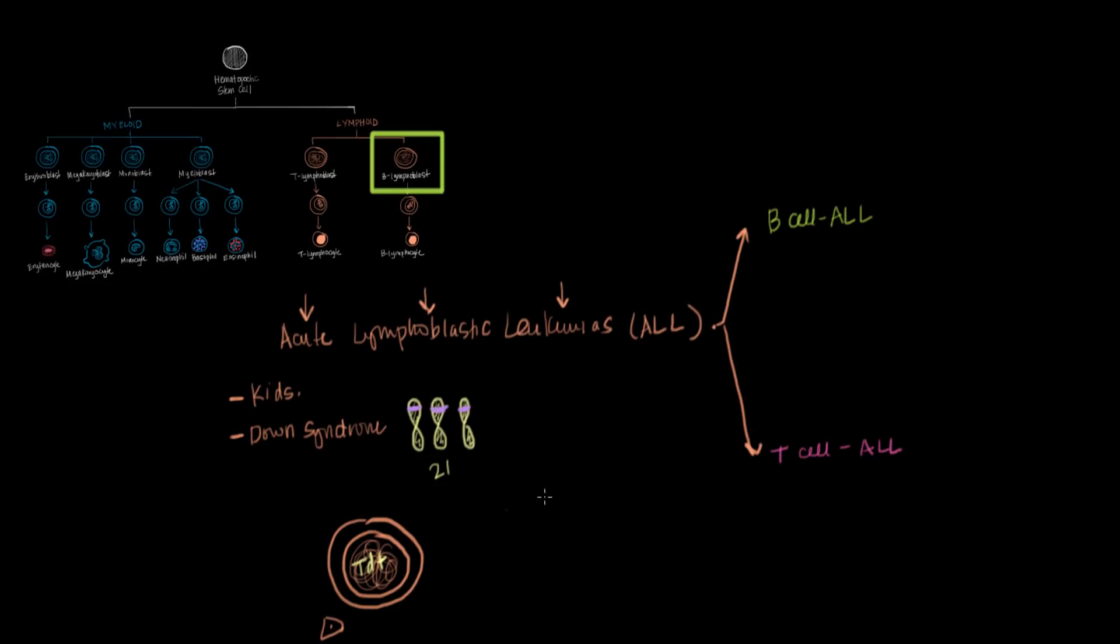And going back to our patient that we did the bone marrow aspiration on, we said that in his aspirate there were lots of lymphoblasts. But how do we tell if that's a T-lymphoblast or a B-lymphoblast? So there are lots of markers that only B-lymphoblasts will have and there are other markers that only T-lymphoblasts will have. So certainly you could use those markers to tell them apart, but there's another really nifty feature of B-cell ALLs that you could use to tell them apart.